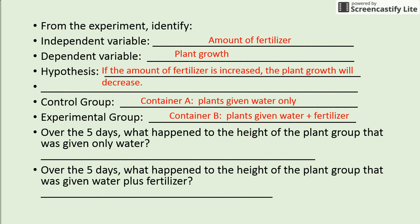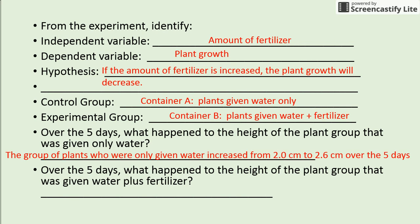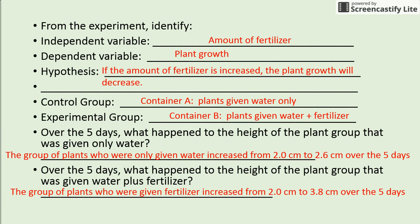Now let's look at the data. Over the five days, what happened to the height of the plant group given only water? Looking at the table from day one to day five, the plants given water only increased from 2.0 centimeters to 2.6 centimeters. For the experimental group — plants given water plus fertilizer — they increased from 2.0 centimeters to 3.8 centimeters over the five days. Key thing to note: the group given fertilizer increased way more than the group given only water.